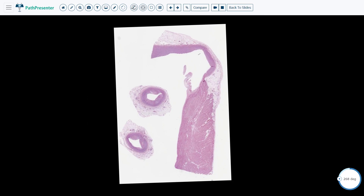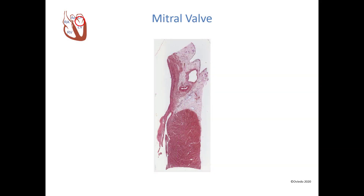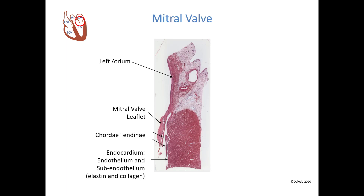Here is our mitral valve summary. You can see the wall of the left atrium and the mitral valve leaflet. Here are the chordae tendineae. Here is the endocardium, which is composed of endothelium and subendothelium. Here is the left ventricle myocardium. Here is the epicardium, which contains adipose and blood vessels.